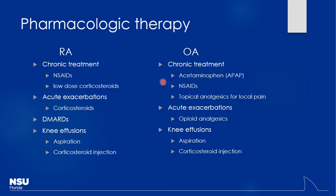Corticosteroids are also very good for dealing with inflammation. Notice that in osteoarthritis, there really is no role for chronic corticosteroids. With OA, there's more room for topical analgesics — topical NSAIDs, capsaicin — playing a prominent role, but not really for RA. For acute exacerbations, corticosteroids are the mainstay of therapy for RA. For acute exacerbations of osteoarthritis, this is where opioids come into play. Most people probably started out with acute pain that developed into chronic pain — that's where a lot of people get started on opioids. Notice there's no opioid use for RA.